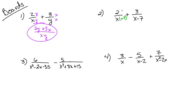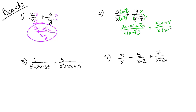Problem two: the common denominator requires multiplying the two different denominators together to get x(x-7). We multiply accordingly on each side and get 2(x-7) + 3x over x(x-7), which is 2x-14+3x = 5x-14 over x(x-7). It would have been nice if we could have canceled an (x-7), but we can't simplify further.